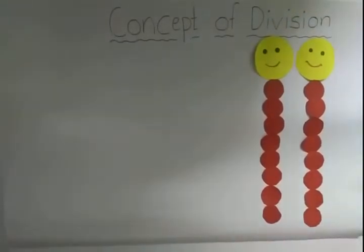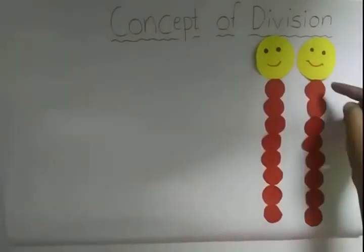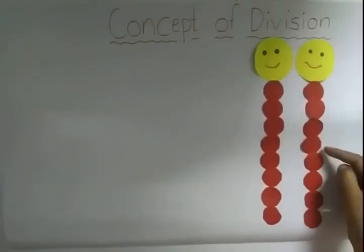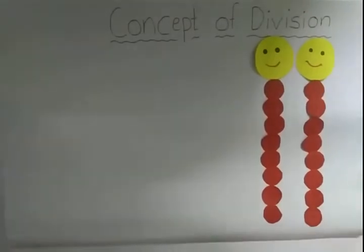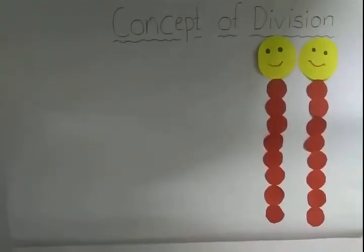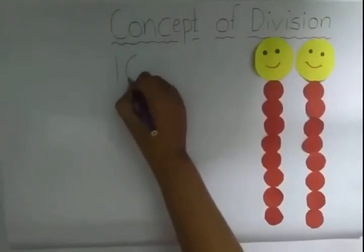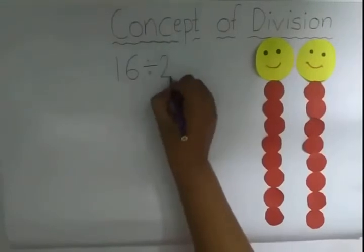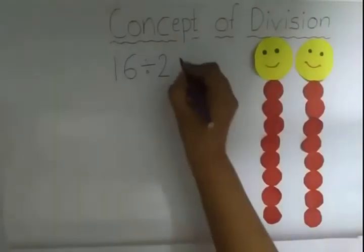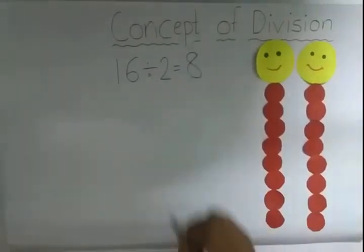Now count how many candies each smiley gets: 1, 2, 3, 4, 5, 6, 7, and 8. So I have distributed 16 candies among two smileys. Yes, and each one is getting 8 candies.